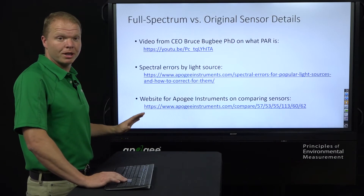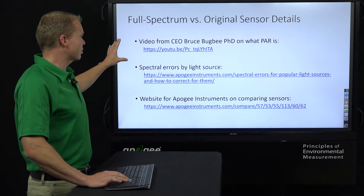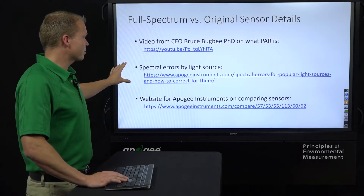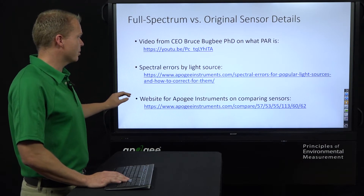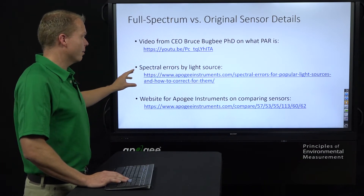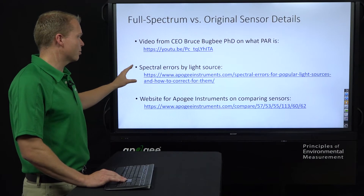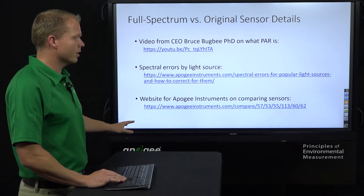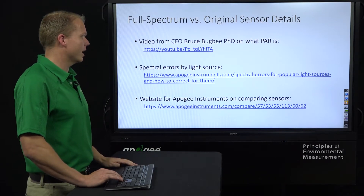We'll touch on that in a minute, but here are some references for you. There's a great video from our CEO, Bruce Bugbee, giving an in-depth explanation of what PAR is. There's also a link that talks about the spectral errors by light source — that will tell you, based on which type of sensor you go with (original or full spectrum) and what type of light you have, what errors you would expect. With the full spectrum, those errors are going to be pretty small. There's also a link that compares all of the sensors together, which we'll show as a table later in this video.